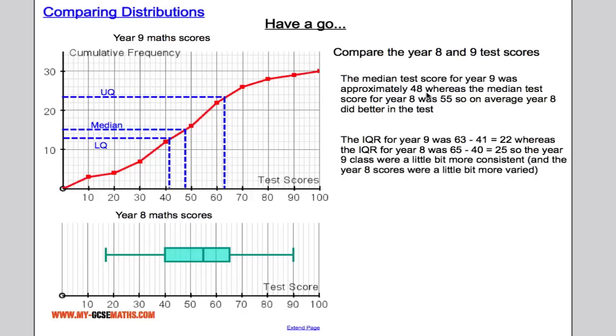So what I've said here is that the median of year 9 was around about 48 whereas year 8 was about 55. So I could say on average, year 8 did better.